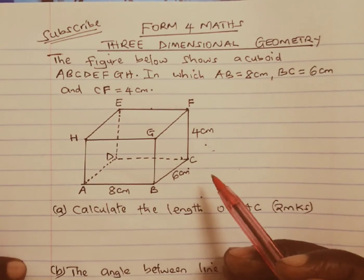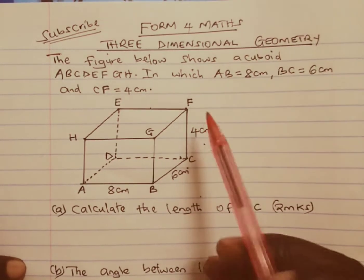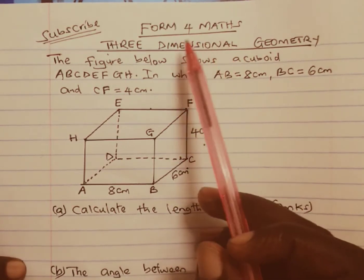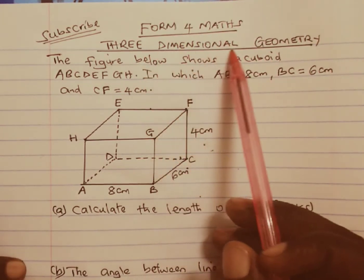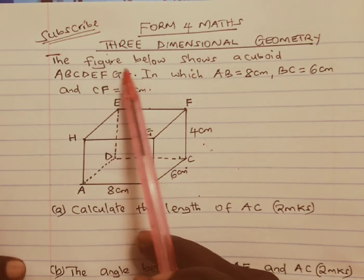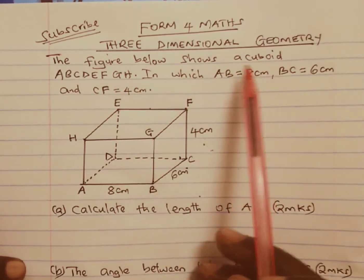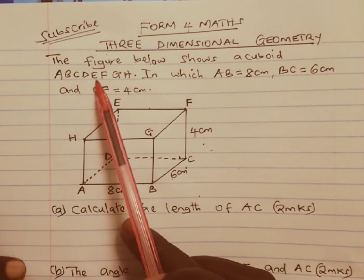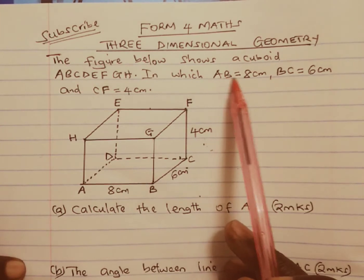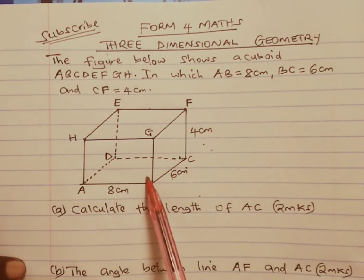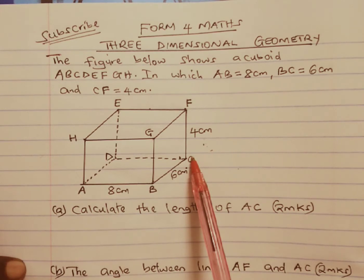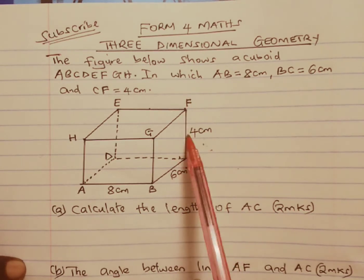Welcome to this lesson and thank you for joining us. We are going through Form 4 mathematics and three-dimensional geometry. The question reads: the figure below shows a cuboid A, B, C, D, E, F, G, H in which AB is 8 cm, BC is 6 cm and CF is 4 cm.